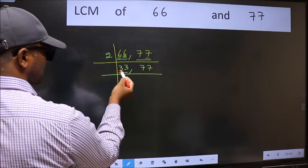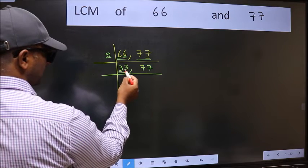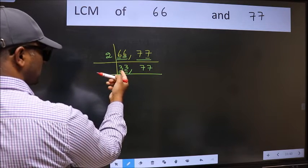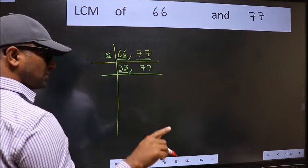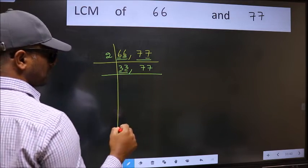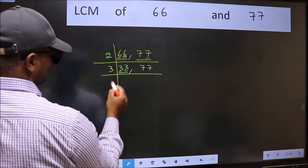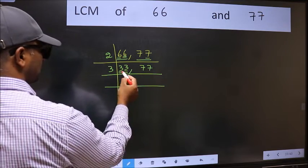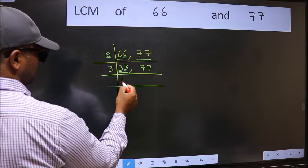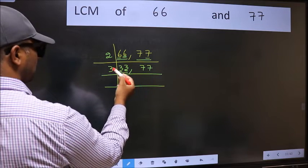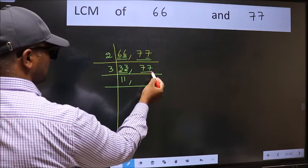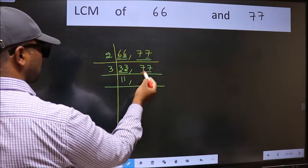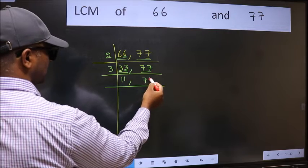Now observe this number, 33. The sum of digits is divisible by 3, so this number is divisible by 3. Most importantly, 3 is a prime number, so take 3. Divide 33 by 3 to get 11. Similarly, 33 divided by 3 is 11. The other number, 77, is not divisible by 3, so write it down as it is.